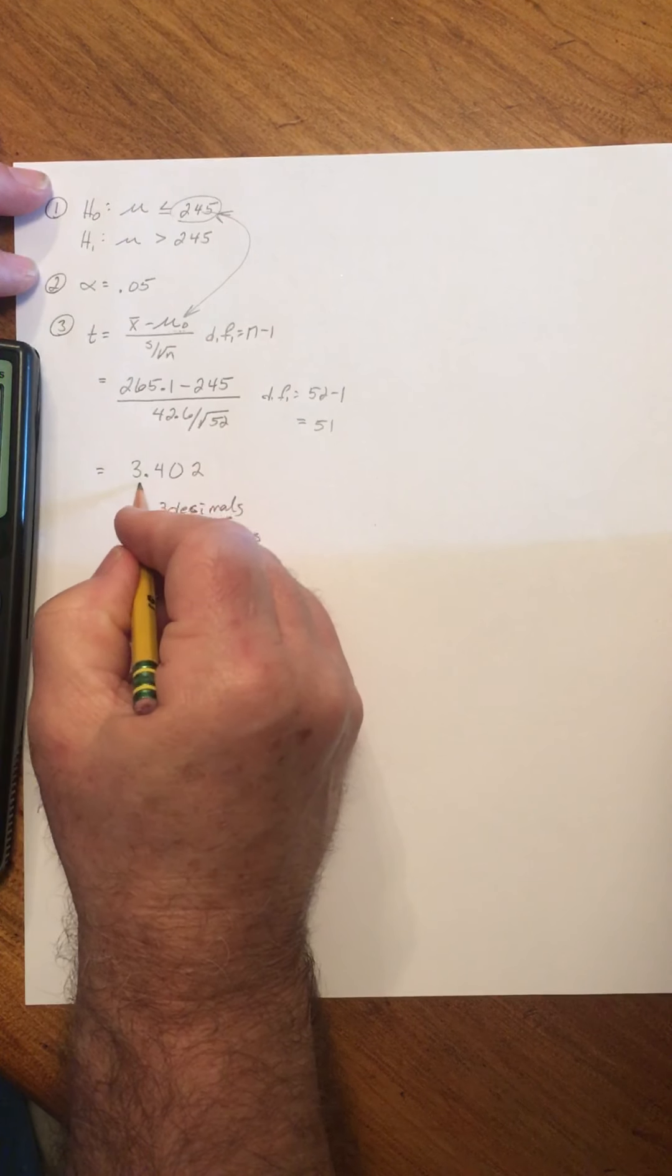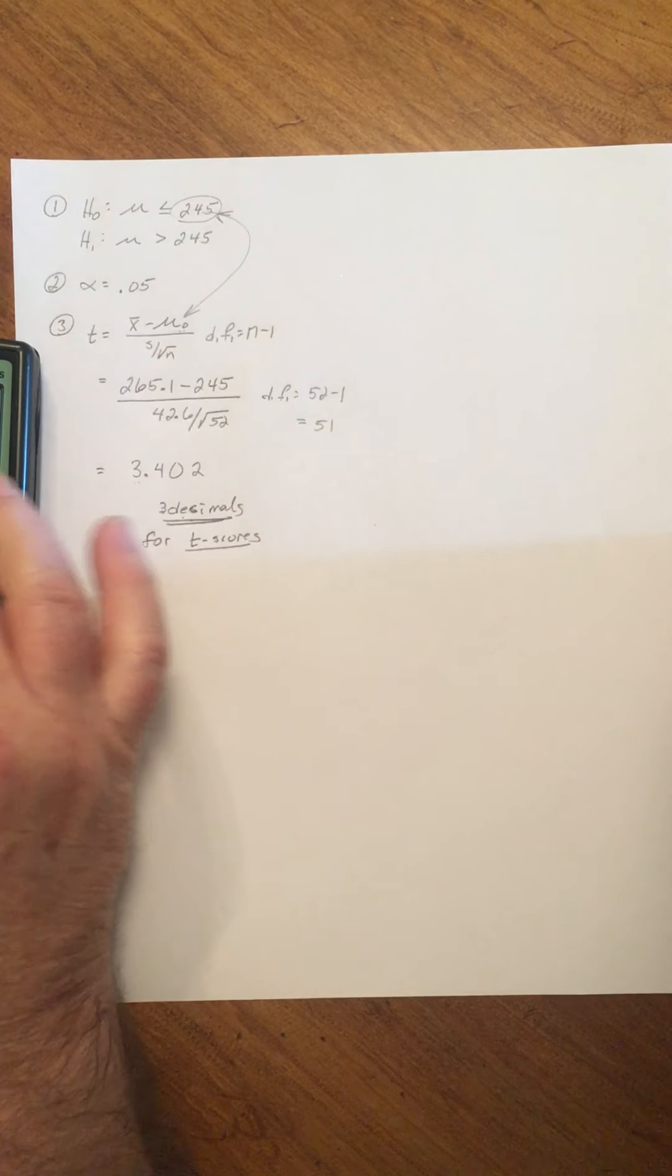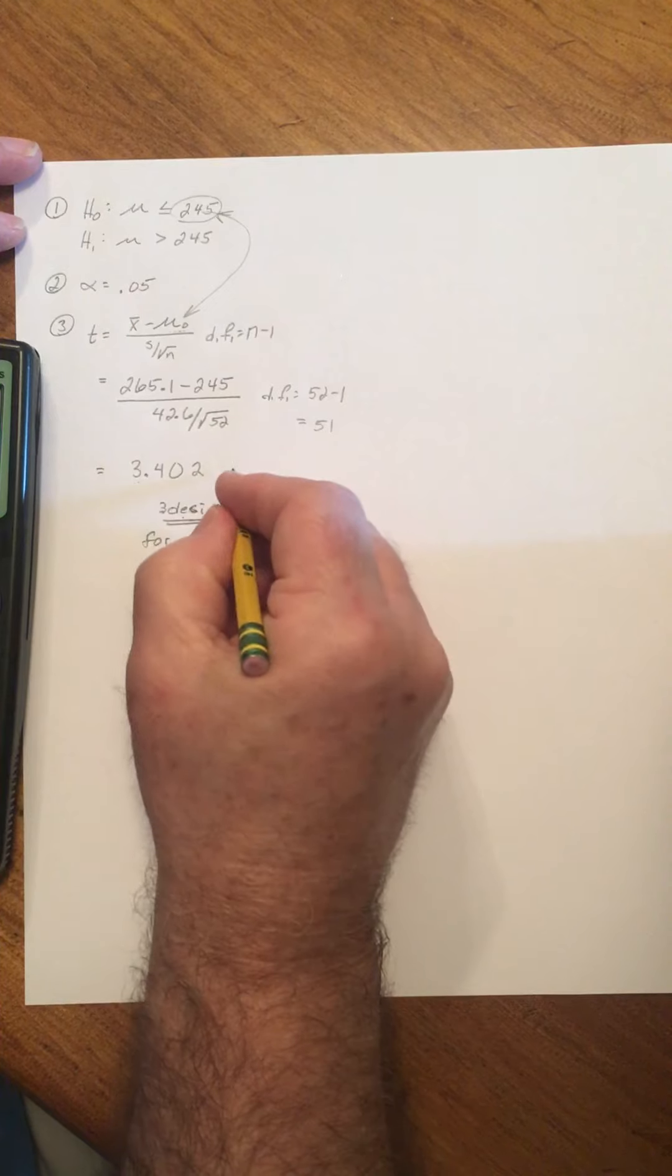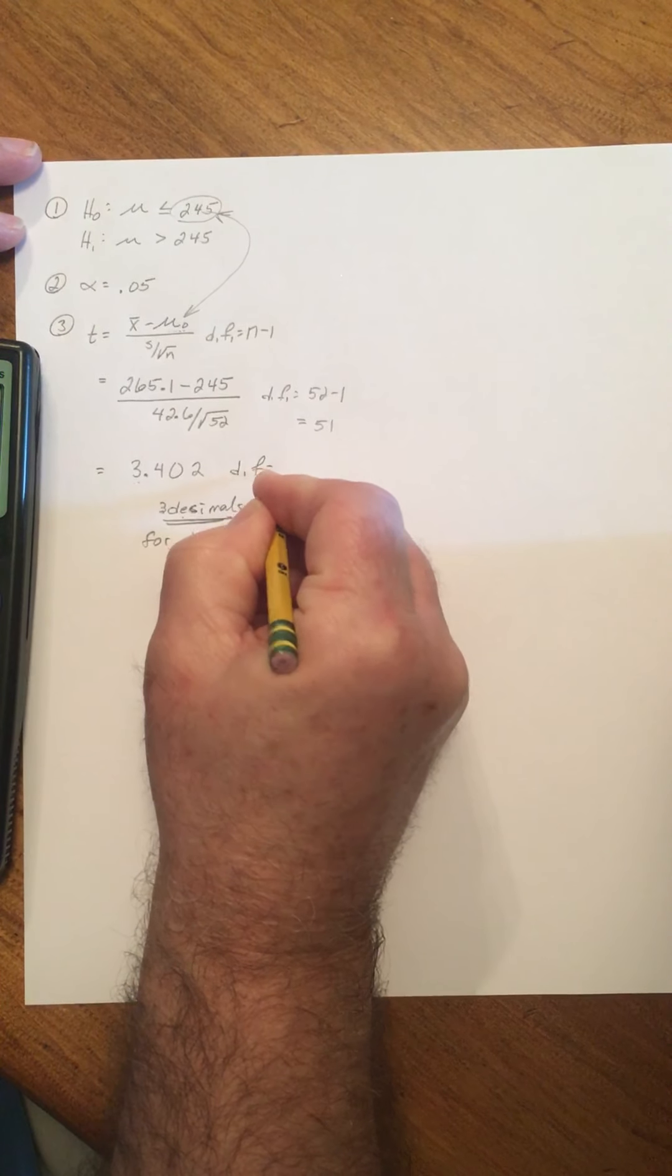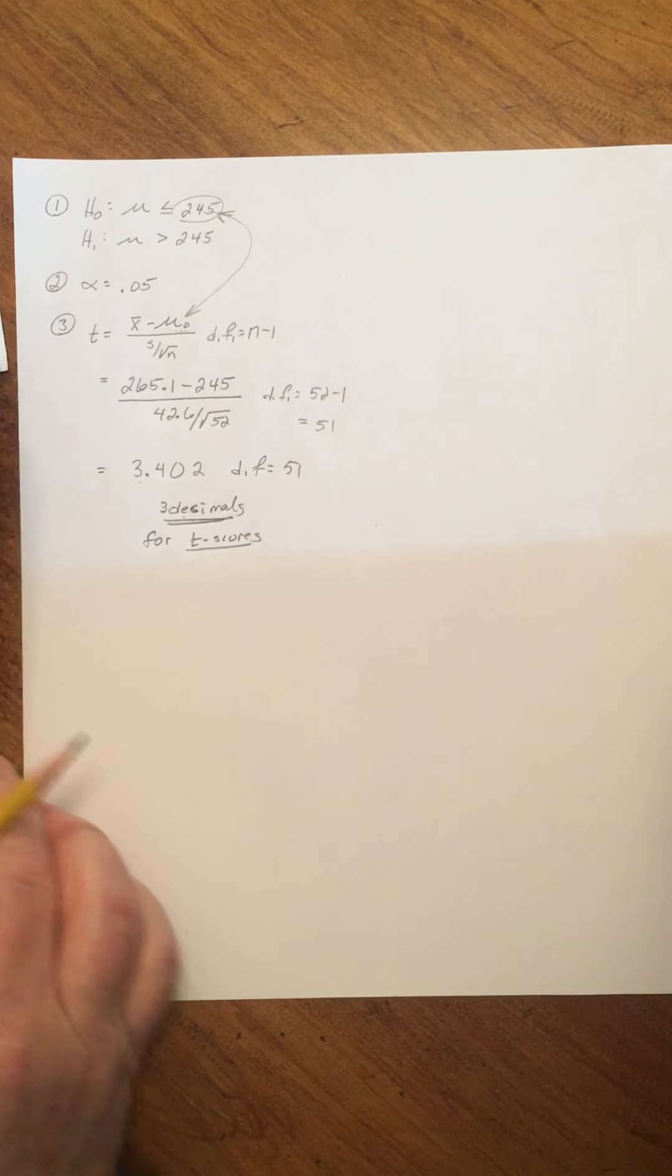So we have 3.402. Just round to the third decimal place, and our degrees of freedom are 51. So that's our result from step three.